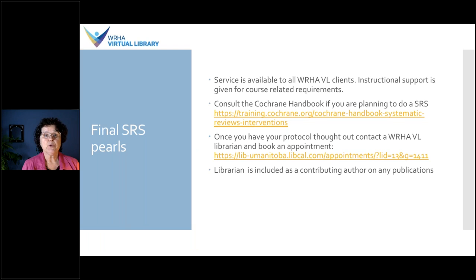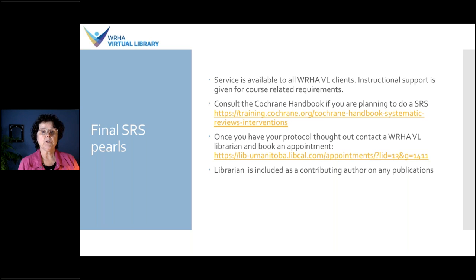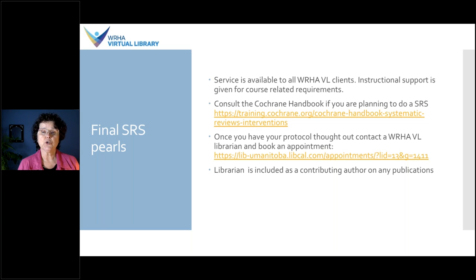Some final notes about systematic reviews: the service is available to all WRHA Virtual Library clients. Instructional support is given if it's a course-related requirement. If you're thinking of doing a systematic review, we recommend consulting the Cochrane Handbook, available online. Once you've thought through your protocol, contact a WRHA virtual librarian to book an appointment and go over the protocol details. Because of the complexity and skill level involved, the librarian is included as a contributing author on any publications.